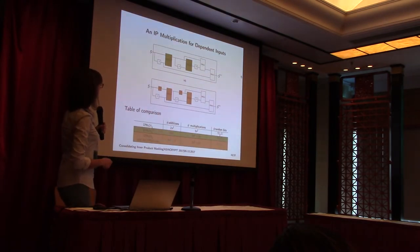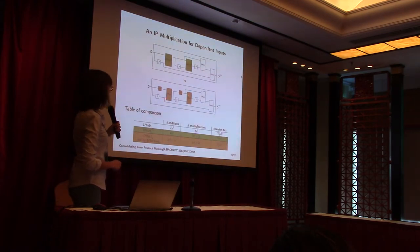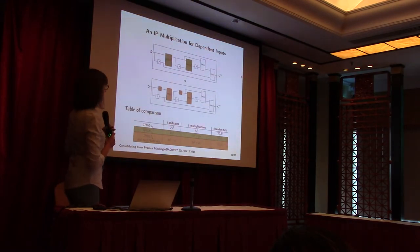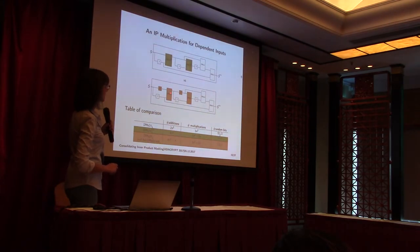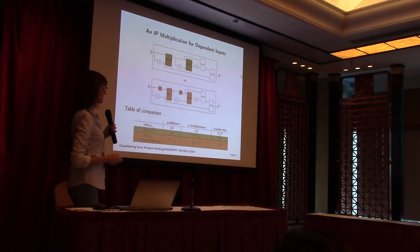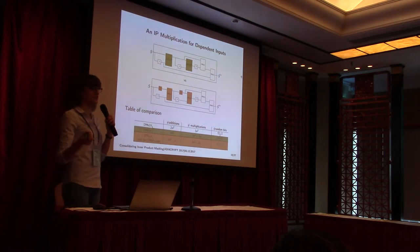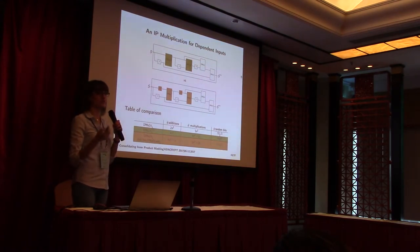For the comparison: this is the new case using our optimized multiplication, and this is what we had before with the multiplication scheme and refreshing. The table compares the number of additions, multiplications, and randomness. The normal multiplication is shown in white, the new scheme in green, and the case with multiplication and refreshing in orange. We have approximately three extra multiplications, but we save a factor of n in randomness — the refreshing previously needed T²·n² randomness, while now refreshing internally A needs only n randomness.